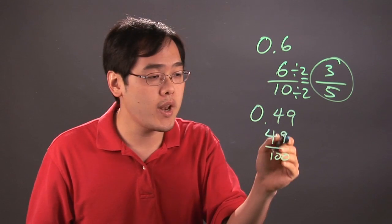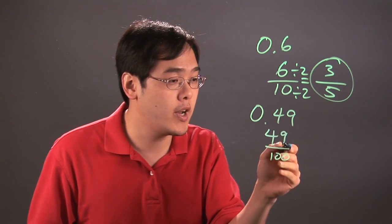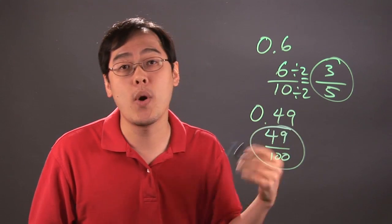Now even though 49 and 100 each have factors, they don't actually have any common factors. So 49 over 100 is actually a fraction already in reduced form.